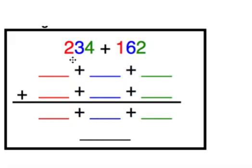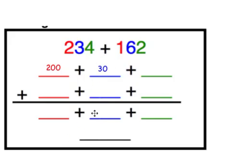Let's focus on the number 234 and write it in expanded form. The digit two in the hundreds place has a value of 200. The digit three in the tens place has a value of 30. The digit four in the ones place has a value of four. So 234 written in expanded form is 200 plus 30 plus 4.